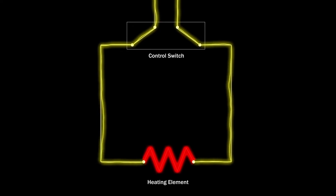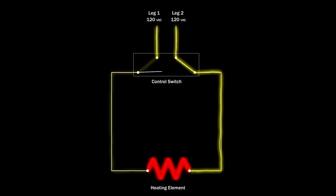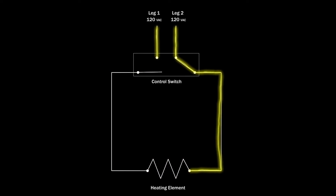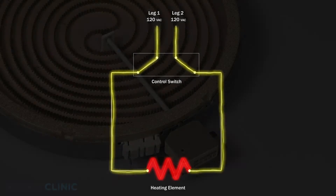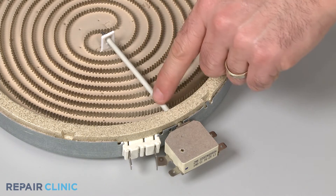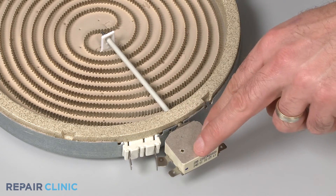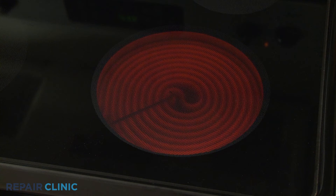The switch regulates the heating element. When the element reaches the designated temperature, the switch shuts off the voltage. This cycle repeats throughout the cooking process to maintain the proper temperature. Keep in mind that a radiant coil has a built-in limiter that monitors the stovetop's surface temperature, which can cause the heating element to cycle on and off more frequently than a conventional coil element.